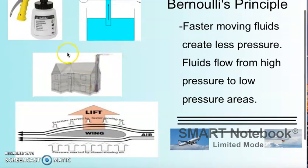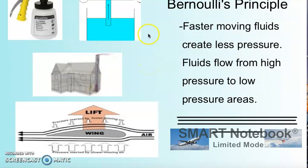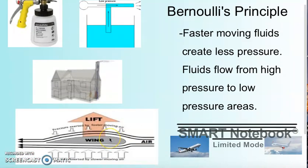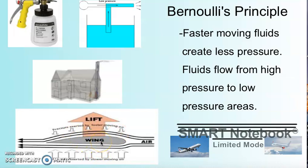The same thing happens with chimneys. If the air is moving at all, then you have lower pressure — remember, faster moving fluids create less pressure. So that brings the smoke up from the area of higher pressure to the area of lower pressure. Take a look at this airplane wing. People have figured out that if you make the air go faster over the top of the wing, you get lift, because of Bernoulli's principle. The wing is shaped so air goes faster over the top. Since the air below has higher pressure, it pushes up on the wing and produces lift.